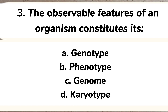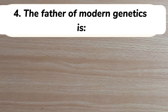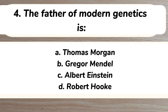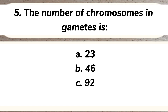Answer: B) phenotype. Number four: the father of modern genetics is A) Thomas Morgan, B) Gregor Mendel, C) Albert Einstein, D) Robert Hooke. Answer: B) Gregor Mendel.